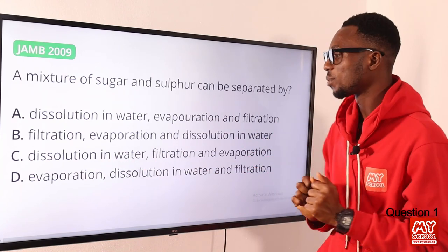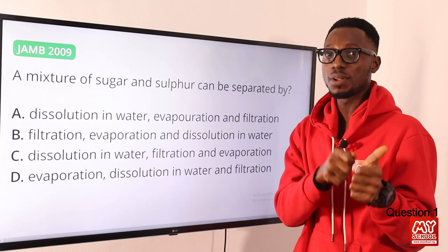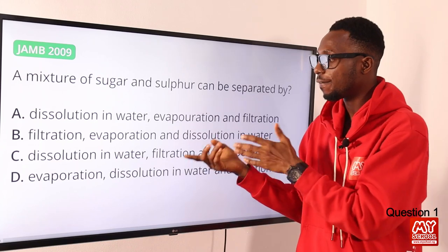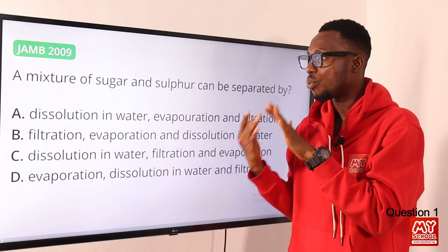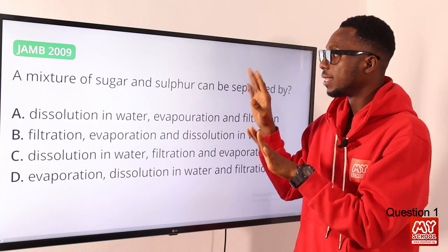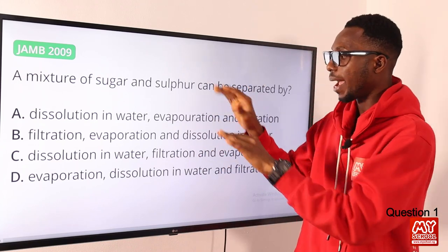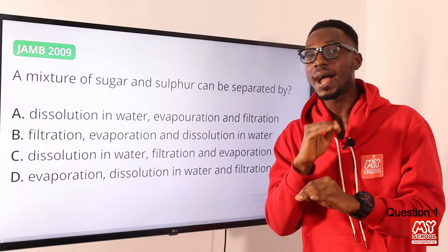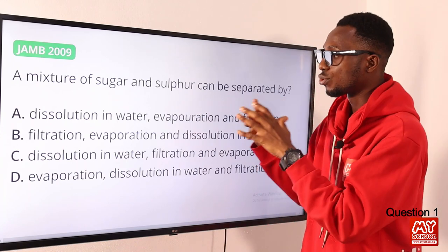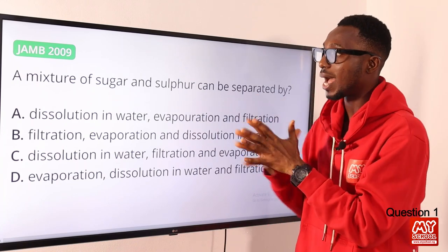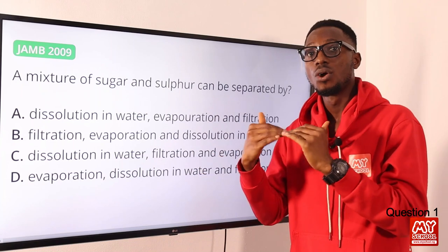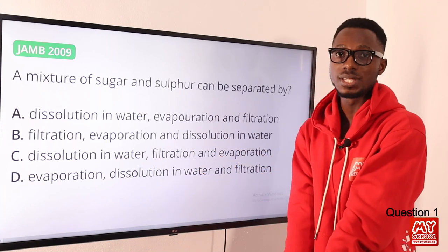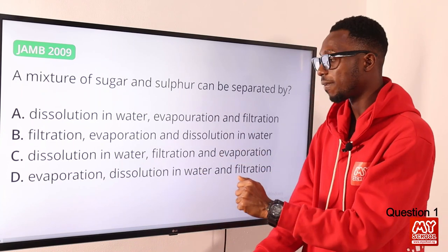Then we are going to introduce filter paper through the process of filtration. In filtration, we'll have the sulfur hanging over the filter paper as a residue. Then the solution of water and sugar will filter down as filtrate into the flask.